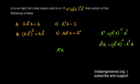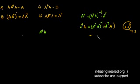That means we can clearly see we have A transpose A into (A transpose A) inverse. So we know this is the identity matrix. From this it is clear that option C is correct.